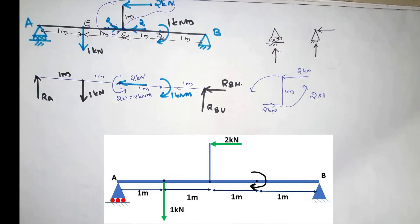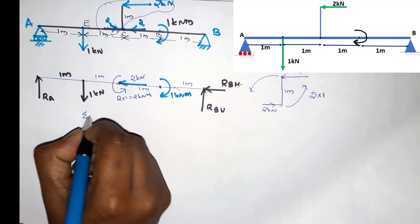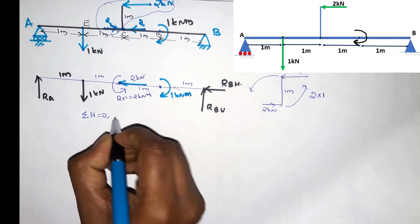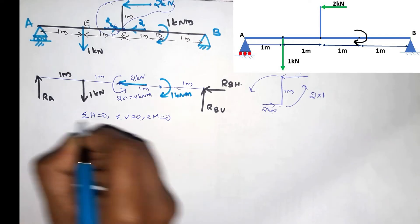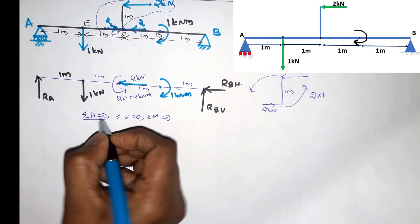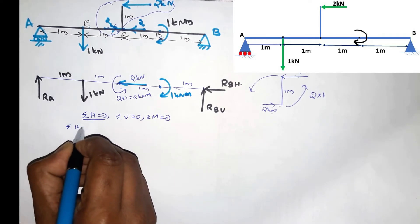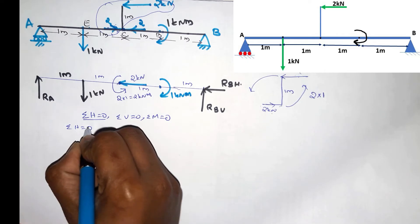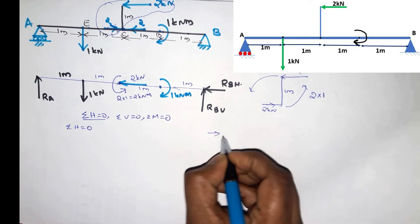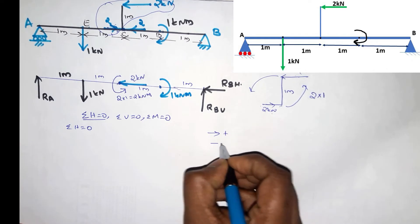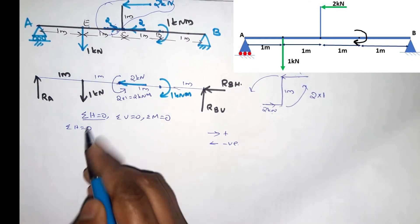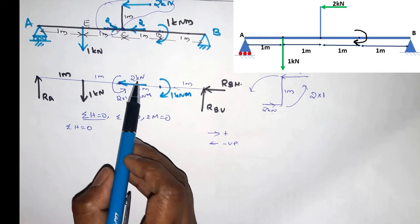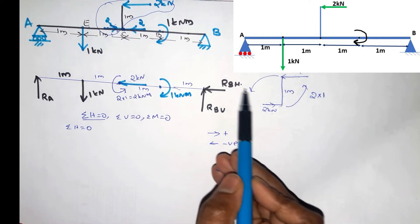The next step is to apply equilibrium equations. The equilibrium equations are: σH is equal to 0, σV is equal to 0, σM is equal to 0. First, applying σH equal to 0. The sign convention: force to the right is positive, force to the left is negative. Force is right, 2kN.